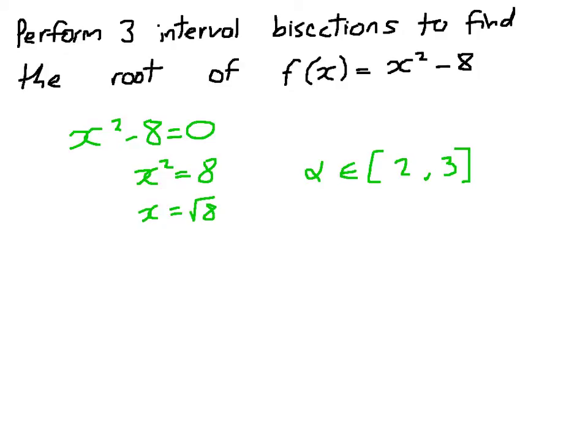So how do we do this interval bisection? Well effectively, we know it lies between 2 and 3. We're simply going to keep cutting that in half over and over again, 3 times, until we get a more accurate approximation. And I'm going to show you a good way of laying that out on your page.